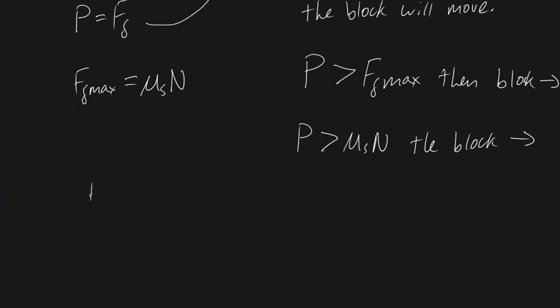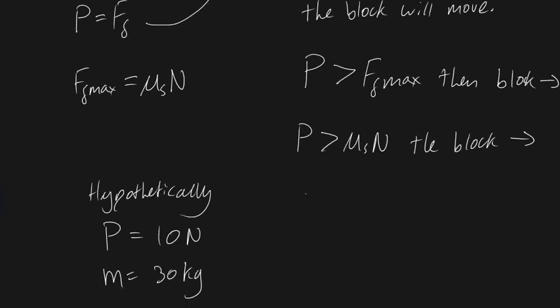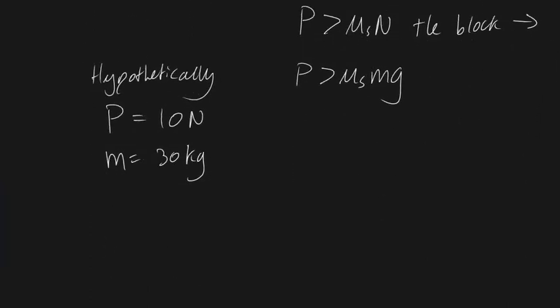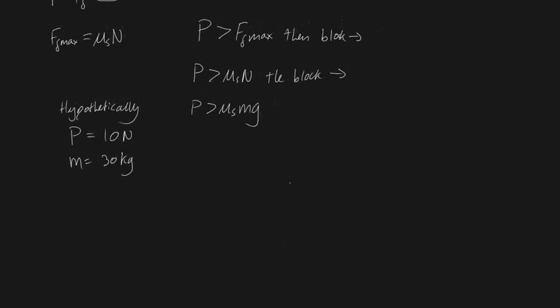Okay, so now it comes to the point of just subbing in values at this point. So let's say hypothetically that P, the force we're applying to the block, was say 10 newtons. And let's say also that our mass was 30 kilograms. Well, how do we determine whether the block's going to move? Well, P is going to be greater than μs times N, and we discussed earlier that N is just mg, right? So μs mg. Is P greater than μs mg? Well, we need to know μs, and let's just say for the sake of simplicity that μs is equal to 0.5. It's a unitless measurement.